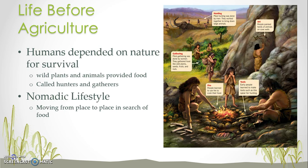Before agriculture came about, humans depended on nature for survival. These humans were called hunters and gatherers, and they lived off wild plants and animals that they could find in their environment. They had what we call a nomadic lifestyle — that means that they moved around from place to place looking for their food.